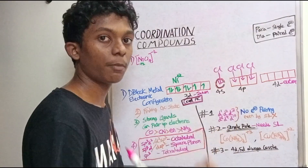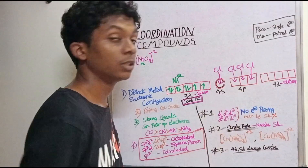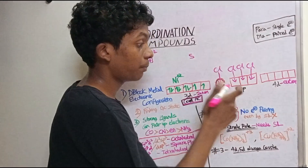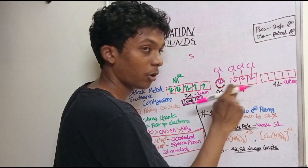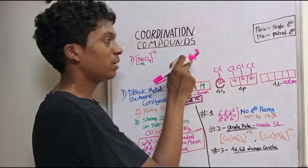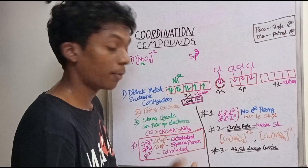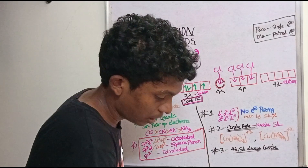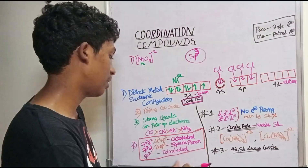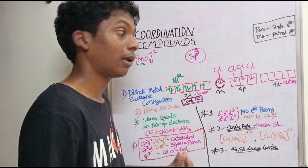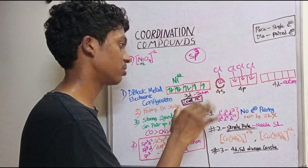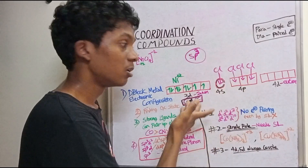There is one S orbital and three P orbitals available in 4S and 4P, giving sp³ hybridization. The geometry for sp³ is tetrahedral. Since the inner 3D orbitals were not used (they are full), the ligands bond through outer orbitals — this is an outer orbital complex.